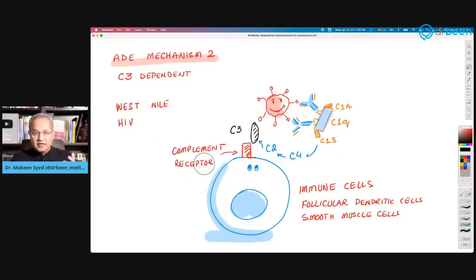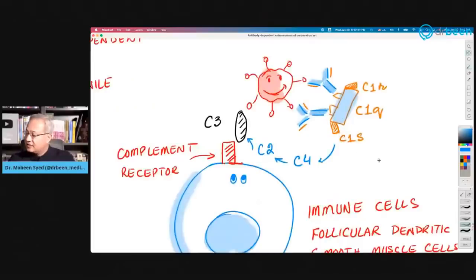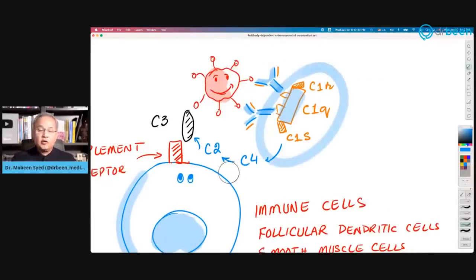Method number two, ADE, antibody dependent enhancement mechanism number two. This mechanism is complement dependent. On the constant part, it can actually bind with carbohydrates and it can bind with complements. There are many biological functions that can happen here. What is more important for us to know right now is the complement binding.